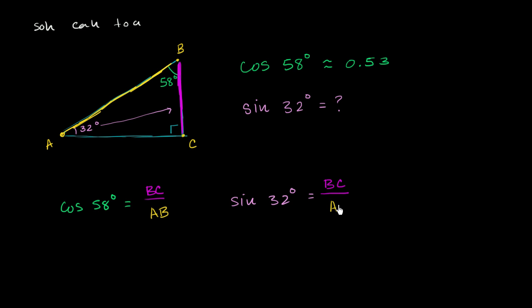It's AB. Notice, the sine of 32 degrees is BC over AB. The cosine of 58 degrees is BC over AB. Or another way of thinking about it, the sine of this angle is the same thing as the cosine of this angle.